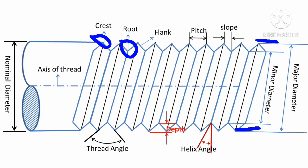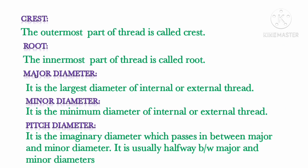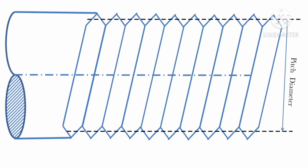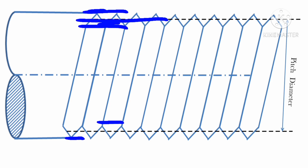Next is pitch diameter. Pitch diameter is an imaginary diameter which passes in between the major and minor diameter — usually halfway between them. The distance between the two crests is called major diameter and the distance between the two roots is called minor diameter. The pitch diameter is the diameter lying midway between the crest and root, i.e., between the major and the minor diameter.